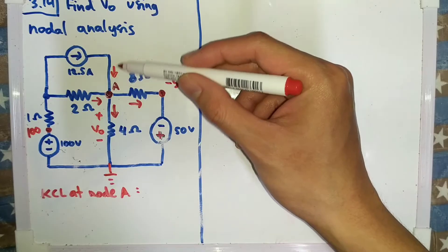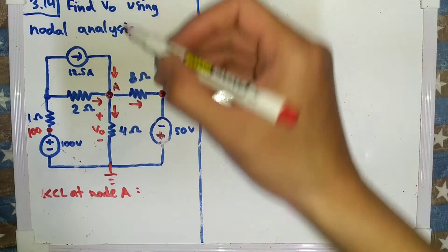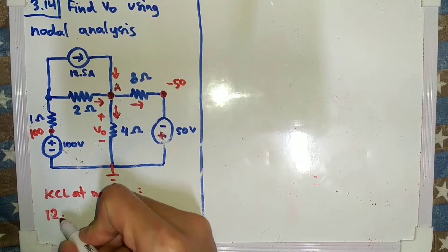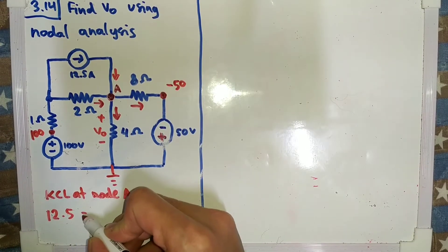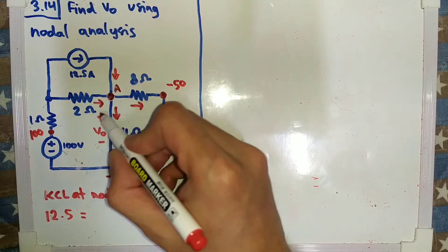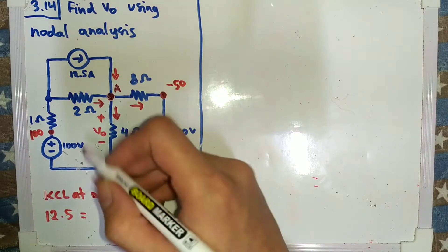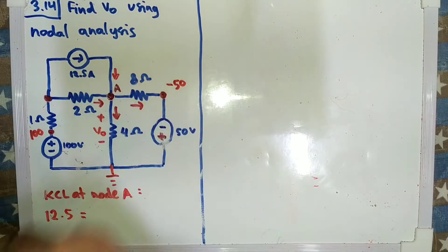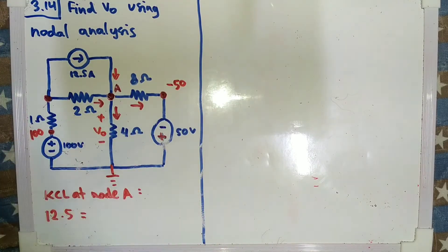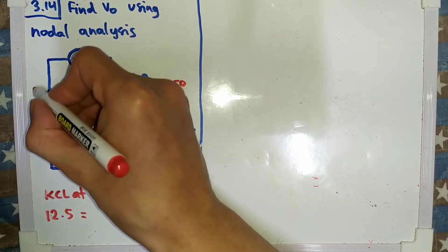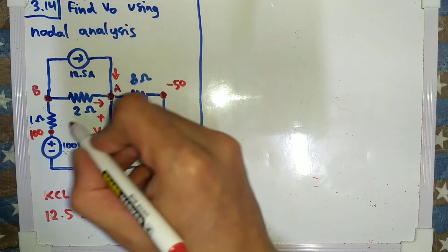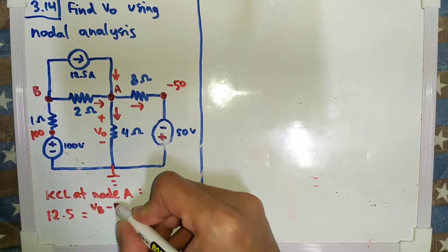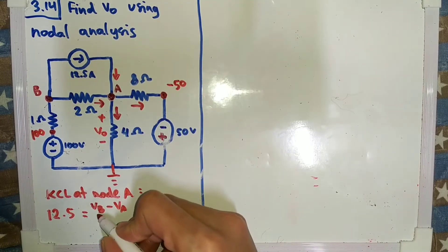Now we have this current that goes in and the value is 12.5, and then we have another current that goes in here. But we don't know the value of this voltage at this point yet, so we will name the point as B, VB. And this current is VB minus VA over 2.